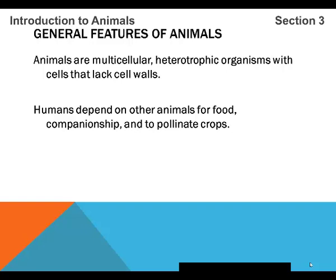Humans depend on other animals for food, companionship, and also to pollinate crops — for example, bees.